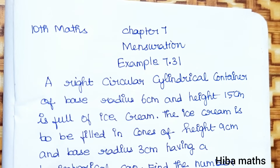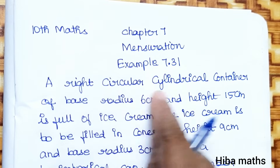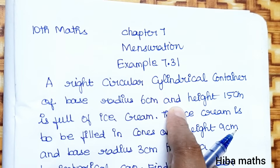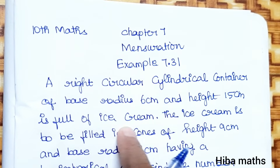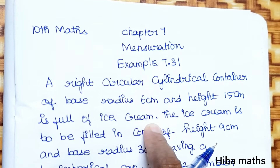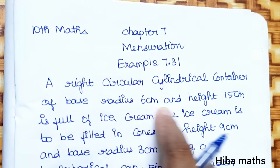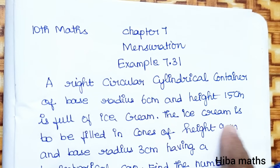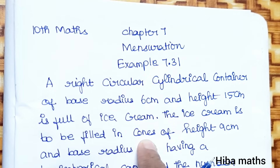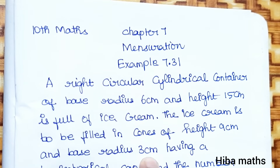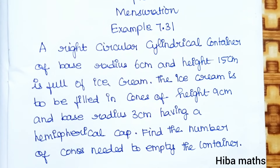Hello students, welcome to Hibamax 10 standard marks, Chapter 7 Mensuration, Example 7.31. A right circular cylindrical container of base radius 6 centimeter and height 15 centimeter is full of ice cream. The ice cream is to be filled in a cone of height 9 centimeter and base radius 3 centimeter having a hemispherical cap.